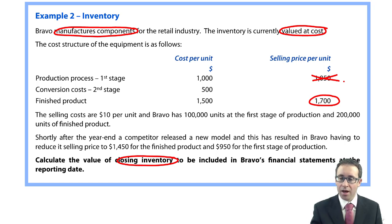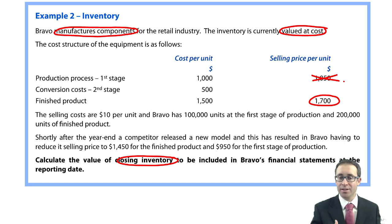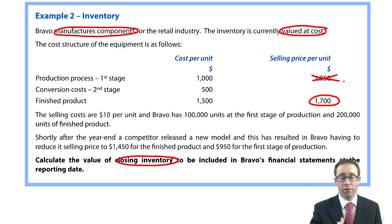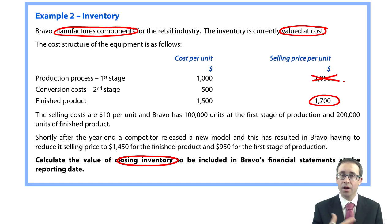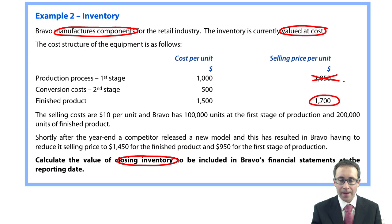They value the inventory correctly at cost because the selling price is $1,700, which is higher than the cost of the finished product, so they're valued at the lower of cost and NRV. For the production process you have a cost of $1,000, and if you deduct the conversion costs of $500 from $1,700 you get $1,200, so again it's correctly valued at the lower of cost and NRV.